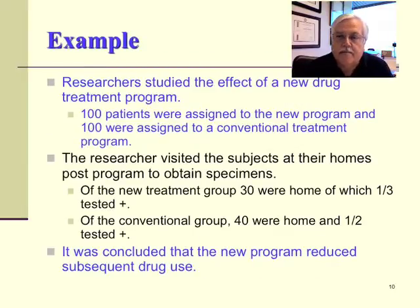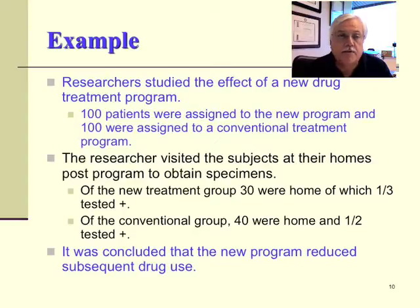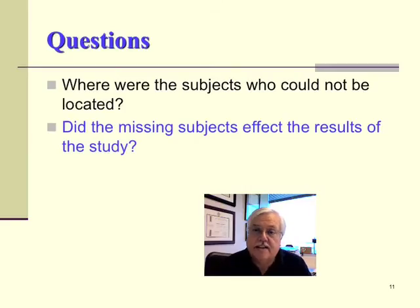Here's an example. A researcher studied the effect of a new drug treatment program. A hundred patients were assigned to the new program and a hundred to a conventional treatment program. The researcher visited subjects at their homes post-program to obtain specimens. Of the new treatment group, 30 were home, of which one-third tested positive. Of the conventional group, 40 were home and one-half tested positive. It was concluded that the new program reduced subsequent drug use. We must ask: where were the subjects who could not be located, and did the missing subjects affect the results of the study?